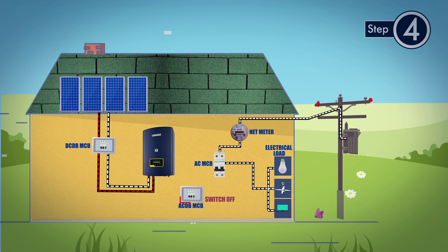Now, switch off the AC MCB in the AC distribution box and connect the grid output wire from the inverter to the AC distribution box. Connect the output from AC distribution box to AC MCB.